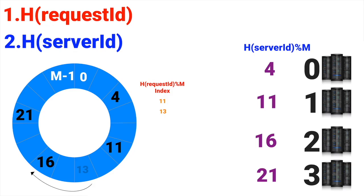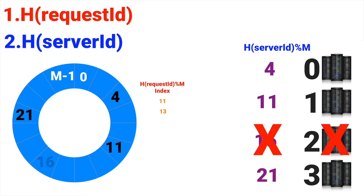It's important to note that we always go clockwise to find the nearest server. Now consider the case of removing a server — say we remove the server at index 16. If a request maps to index 16, there's no server there, so we go clockwise and find the nearest server at index 21. We only had to migrate data from server 2 to server 3 — only the immediate neighbor is affected, so we make minimal changes.